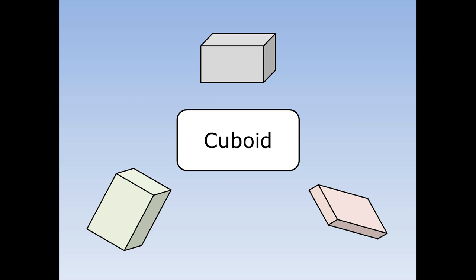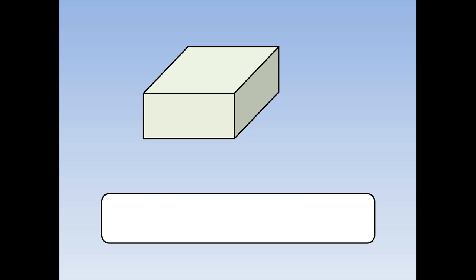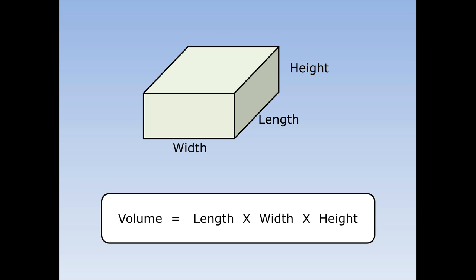A cuboid is a three-dimensional box shape. To find the volume of a cuboid, first I need to label the different sides: the length, the width, and the height. The volume of a cuboid is the length times the width times the height.